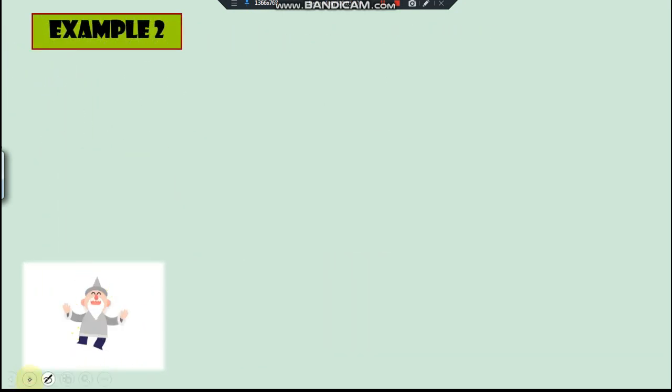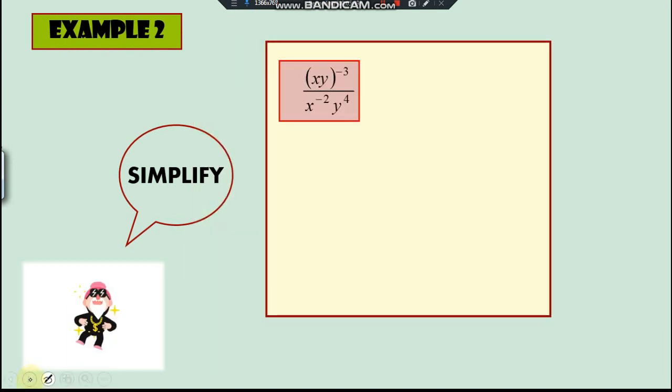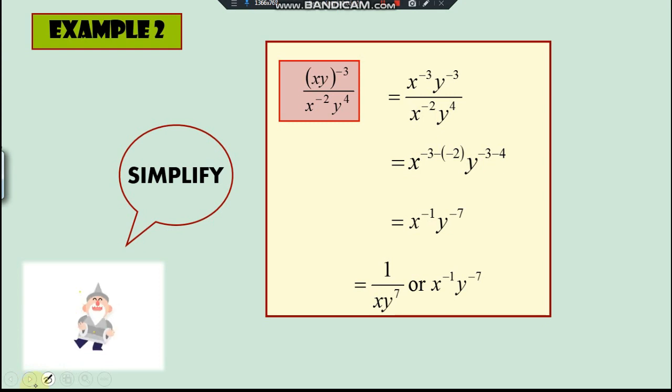So now, what will happen to example two? Example two asks you to actually simplify this one. So as usual, use your rule that been known before. So that's why we can actually expand this to be x power of negative three, as well as y power of negative three. And then accordingly use the same base, so whenever you have divide, you have to change it into minus for the power.